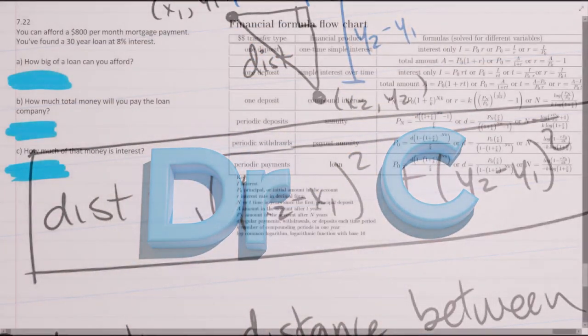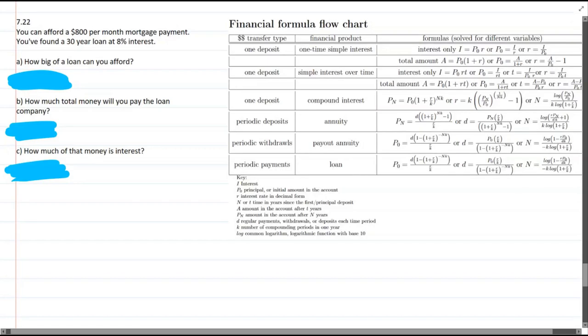Hooray! Mortgage payment, so fun! Alright, so we can afford $800 per month mortgage payment. So right away I know a few things. I know the D value is $800.